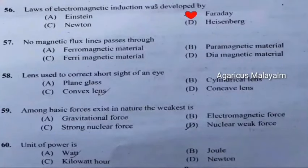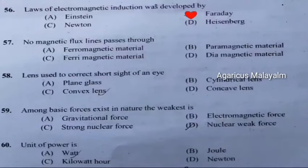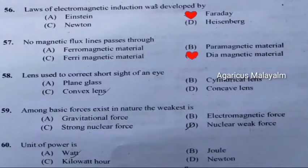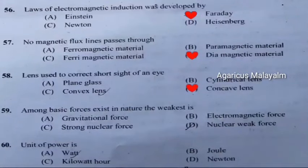Question 57: No magnetic flux line passes through. Correct answer is Option D: Diamagnetic material. Question 58: Lens used to correct short sight of an eye. Correct answer is Option D: Concave lens.